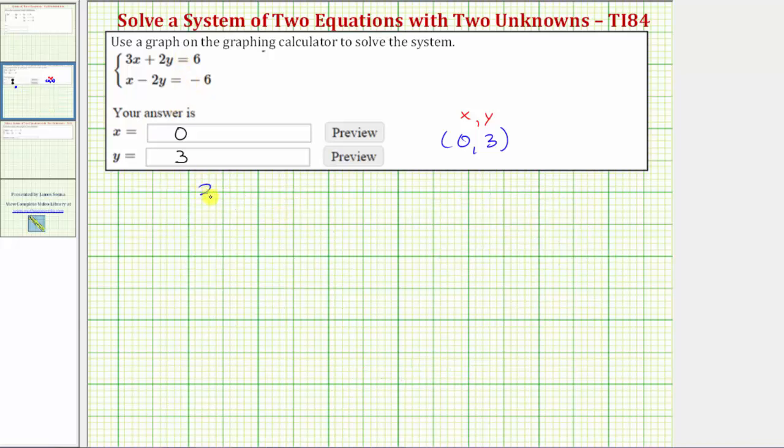Using the equation 3x + 2y = 6 and the equation x - 2y = -6, we'll substitute 0 for x and 3 for y to make sure this ordered pair does satisfy both equations. So performing substitution here, we'd have 3 times x, which is 0, plus 2 times y, which is 3, equals 6. Well, 3 times 0 is 0, so we have 0 + 6 = 6.